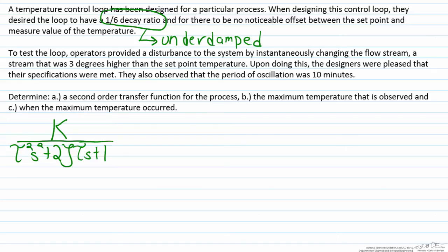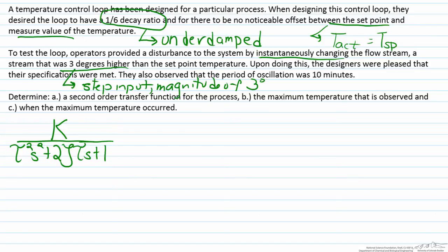Additionally we see that there's no difference between the setpoint and the measured value of the temperature, so therefore that tells us that t actual at the end will equal t setpoint. What we also see here is that since we have an instantaneous change of three degrees, this tells us that this is a step input with the magnitude of three degrees, and we're also told that the period of oscillation is ten minutes.